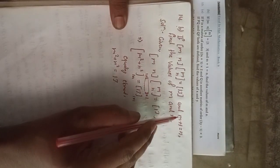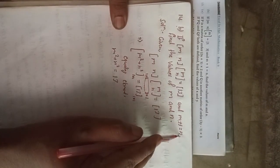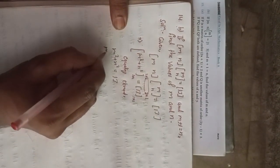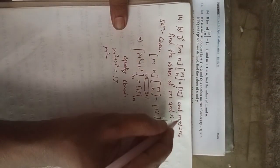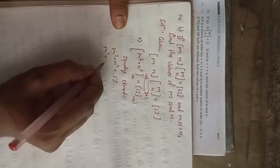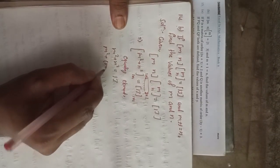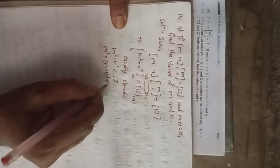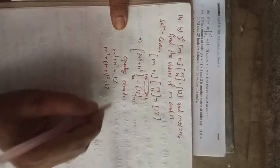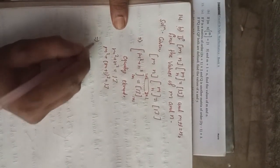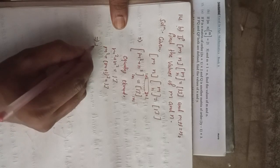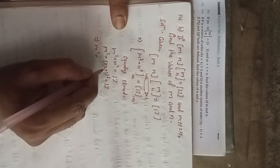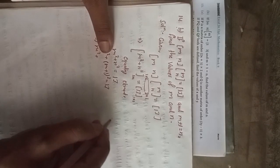In the question it is given that m plus 1 is equal to n. That means in place of n we can write m plus 1. So the equation becomes: m² + (m + 1)² = 13.